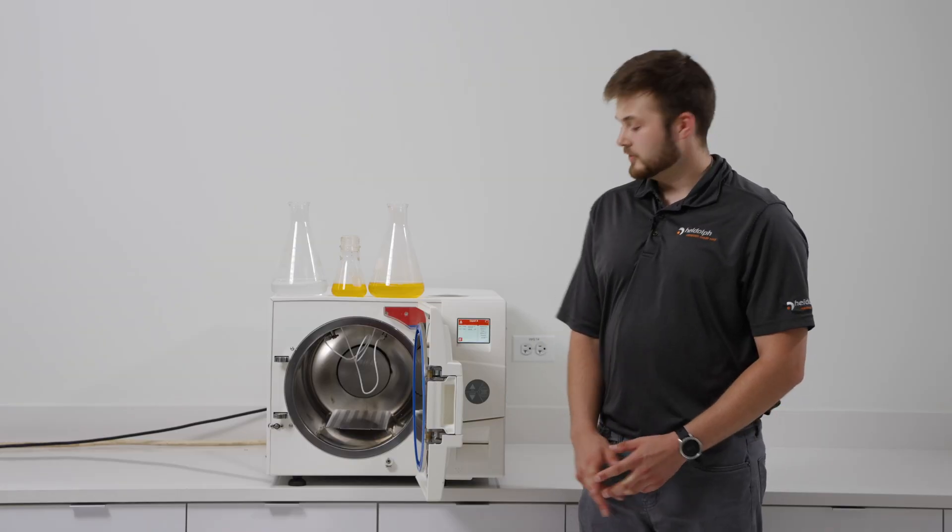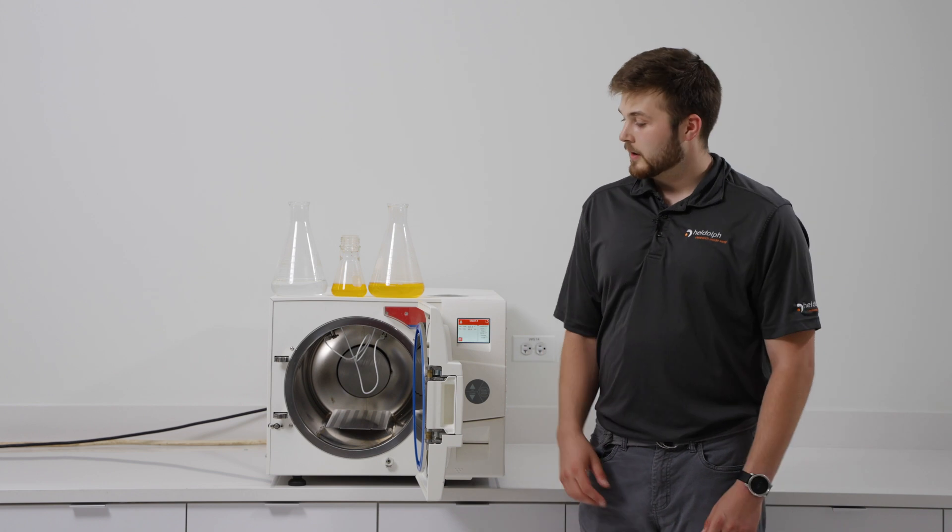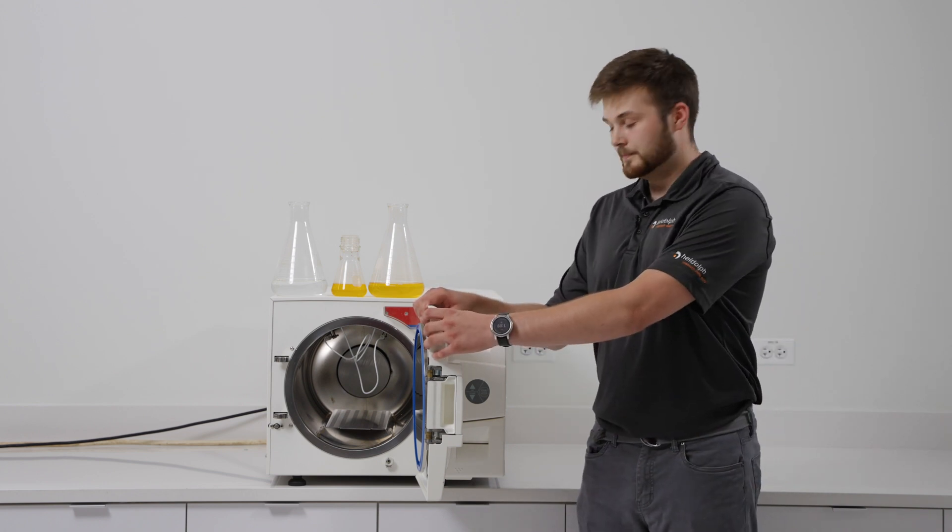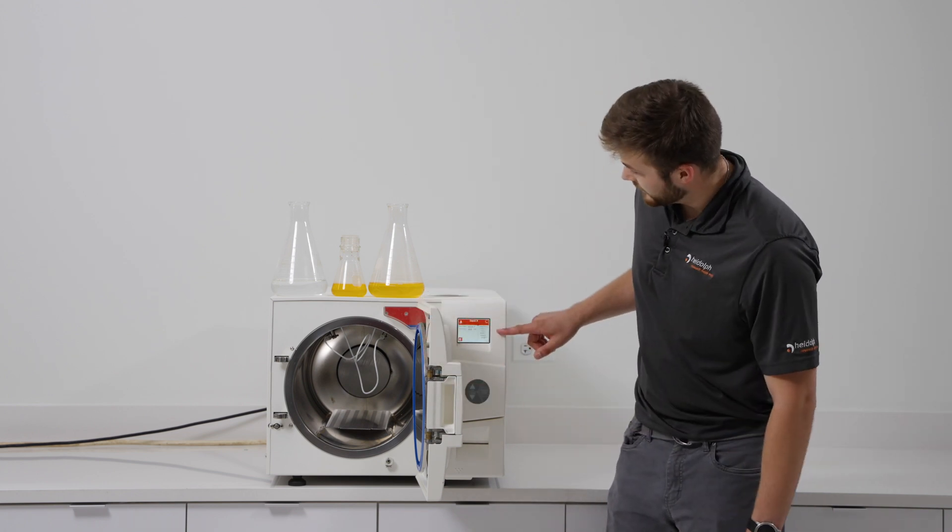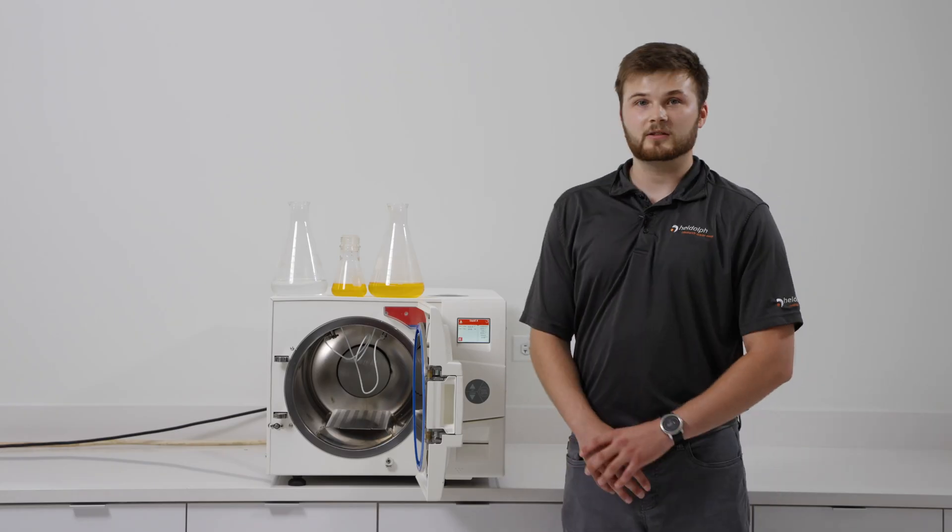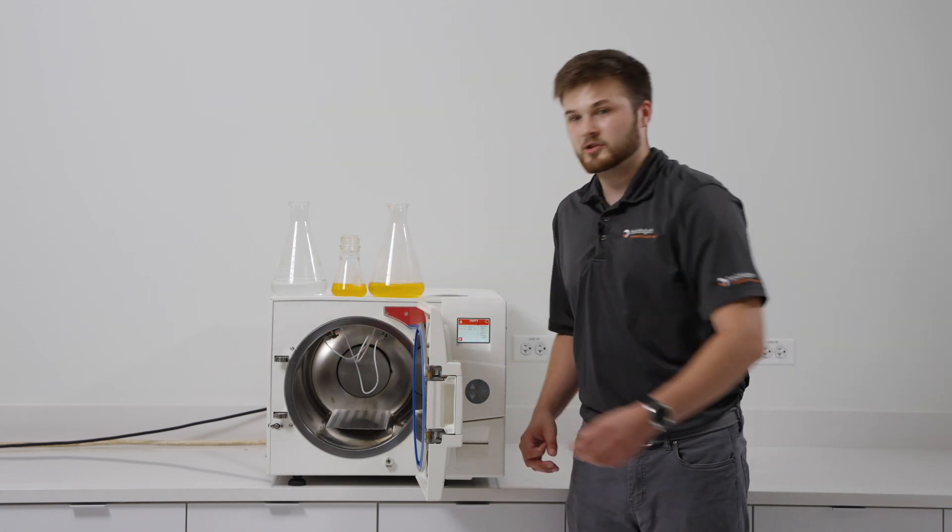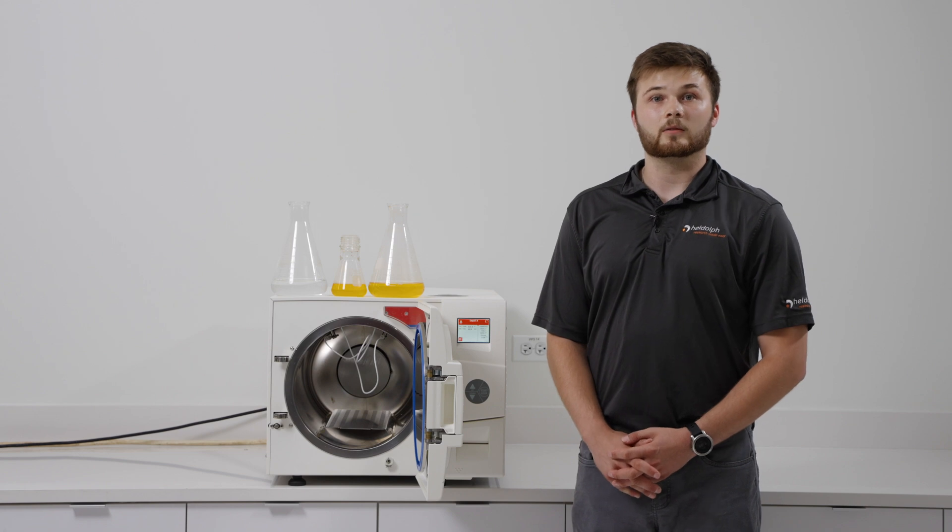Once you have the unit turned on, you can use the up and down arrow keys to select the appropriate cycle. You can only do this with the door open. I have the liquid A cycle selected here and you can see two different temperatures on the screen as well as a pressure. The temperatures displayed are the temperatures of the probes themselves and the pressure is the pressure being read within the chamber.